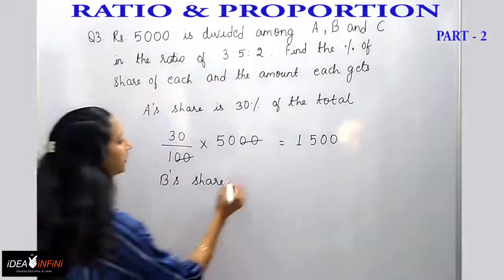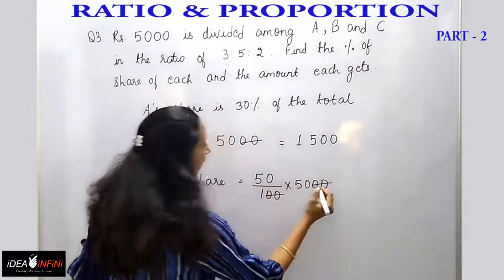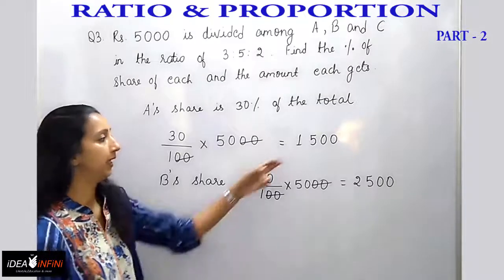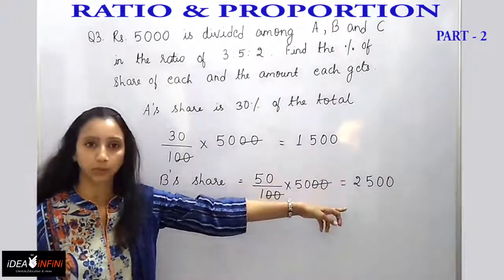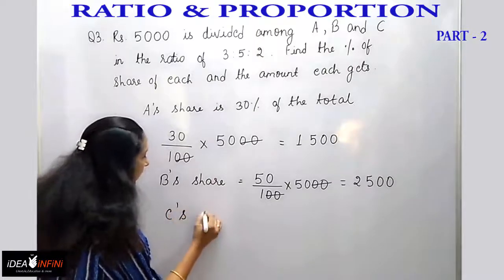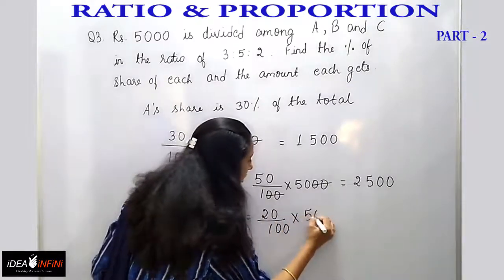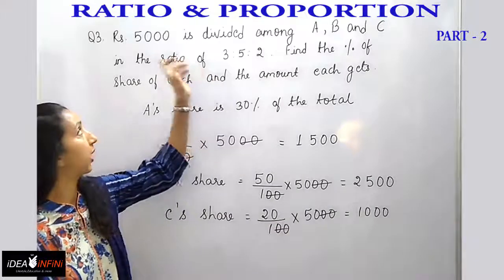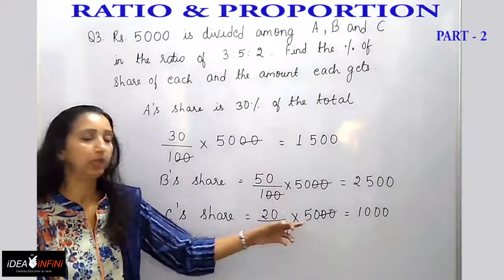B's share is 50% of 5000, which is 50 by 100 into 5000. The two zeros cancel, giving 2500. For C's share, either add A and B's amounts (1500 plus 2500 equals 4000) and subtract from 5000 to get 1000, or calculate 20% of 5000 directly as 20 by 100 into 5000, which also gives 1000.